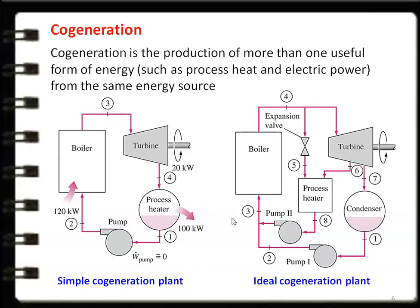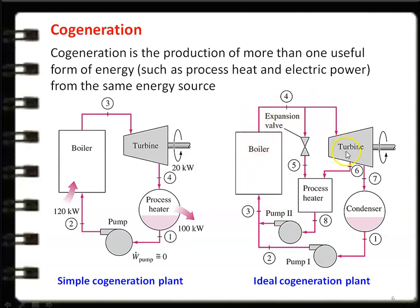The ideal cogeneration plant is a modification of the simple plant. Looking at the diagram: there is a boiler, expansion valve, turbine, process heater, condenser, pump 1, and pump 2. The boiler produces high-temperature, high-pressure steam, which is sent to the turbine as well as through the expansion valve to the process heater. Some portion of the steam goes to the turbine and another portion goes to the process heater through the expansion valve.